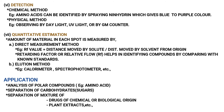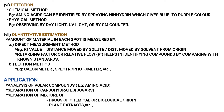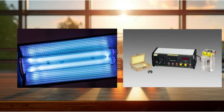The sixth point is detection. The chemical method: amino acids can be identified by spraying ninhydrin, which gives a blue to purple color. So if we add amino acids and they separate, we spray ninhydrin to detect them. The physical method includes observing by daylight, UV light, or by GM counter.